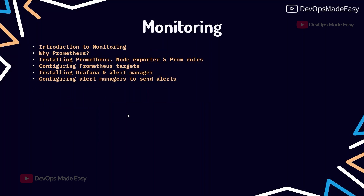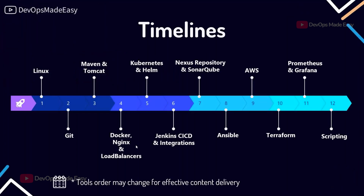For monitoring, we primarily focus on Prometheus and Grafana — how to install them and core components like Node Exporter, Prometheus rules, Alert Manager, installing Grafana, and how to create alerts using Prometheus rules.